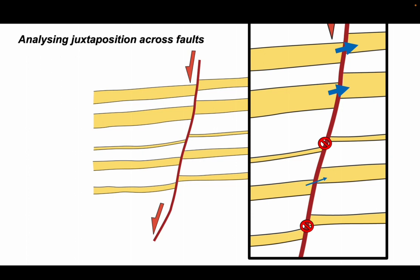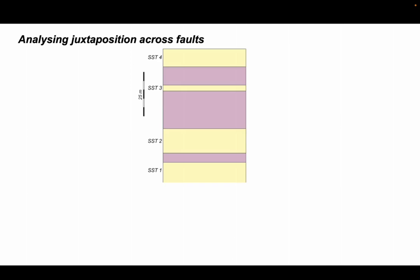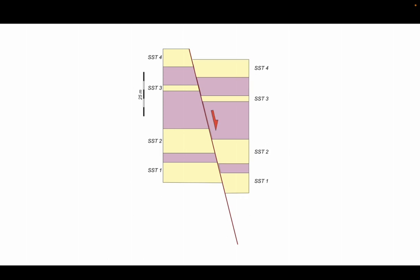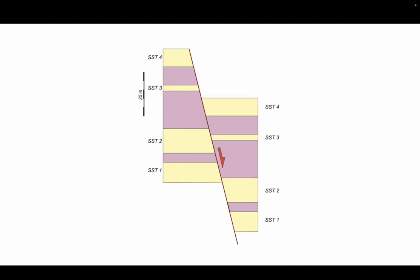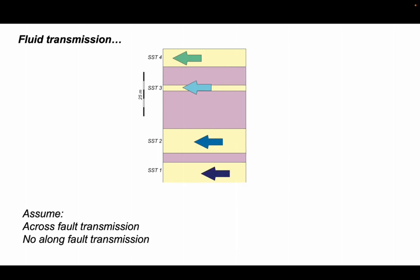Let's look at analyzing juxtaposition. Let's set up a stratigraphic column like this with four sandstones labeled one to four, separated by low permeability formations. Put the fault in and increase the offset. Now let's replay that and look at the impact on fluid transmission. We're going to assume that fluids can be transmitted across the fault and there's no along-fault transmission.